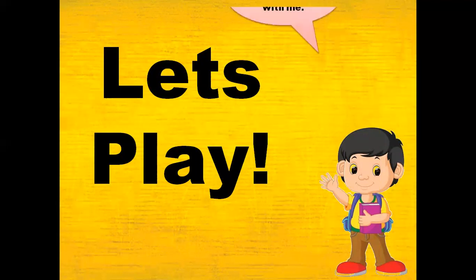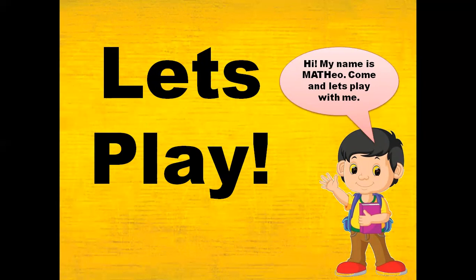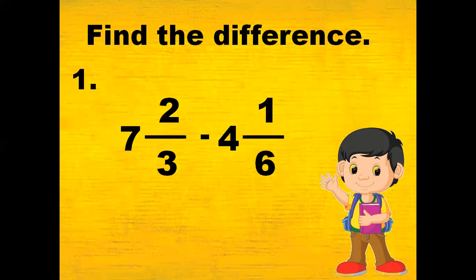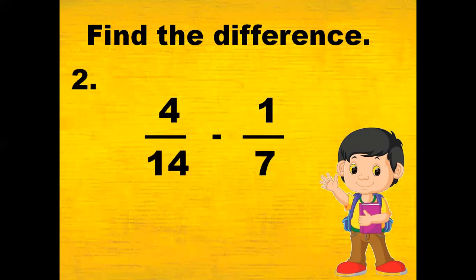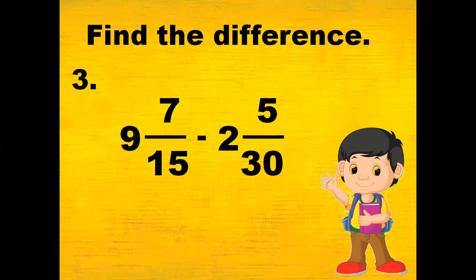Now let's play! Hi, my name is Mateo. Come, let's play with me. Find the difference. Number 1: 7 and 2 thirds minus 4 and 1 sixth. Number 2: 4 fourteenths minus 1 seventh. Last number: 9 and 7 fifteenths minus 2 and 5 thirtieths.